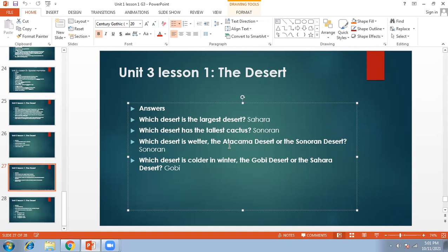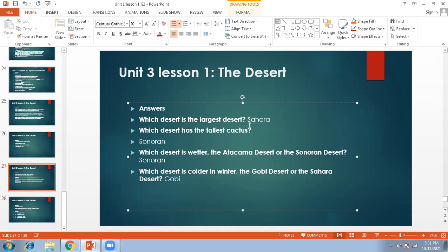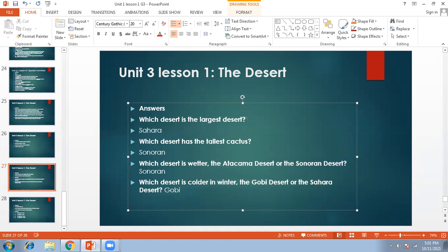Which desert is wetter, the Atacama Desert or the Sonoran Desert? The Sonoran Desert is wetter. And which desert is colder in winter, the Gobi Desert or the Sahara Desert? The right answer is the Gobi Desert. It gets very cold during the winter season because of the cold winds and rain sometimes.